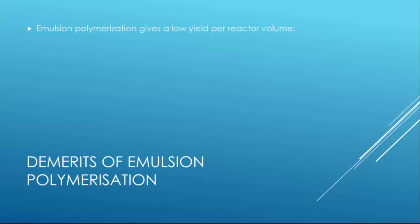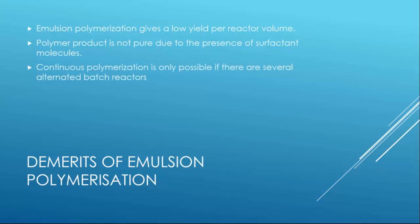Of course, this comes with some demerits. Emulsion polymerization could give a lower yield per reactor volume. The polymer product is not so pure, because of a lot of impurities, and of course, the surfactant molecules are present. Continuous polymerization is only possible if there are several alternated batch reactors. Otherwise, polymerization may be done only batch-wise. And it cannot be used in the preparation of some condensation polymers or in some processes that employ Ziegler-Natta catalysts, as they may react with water.